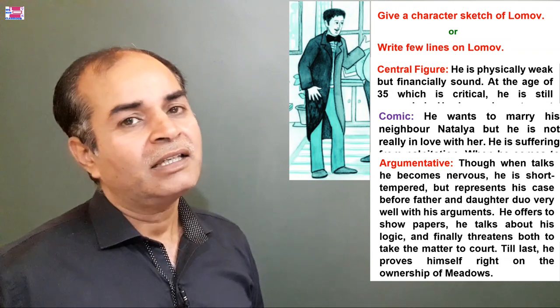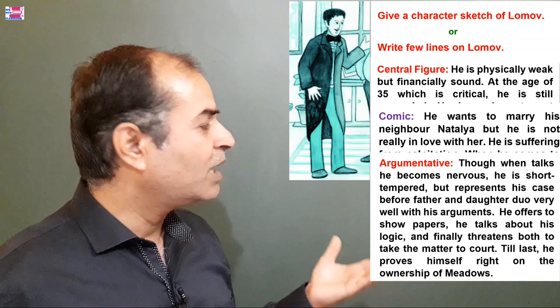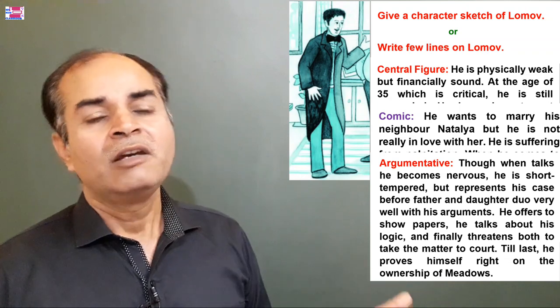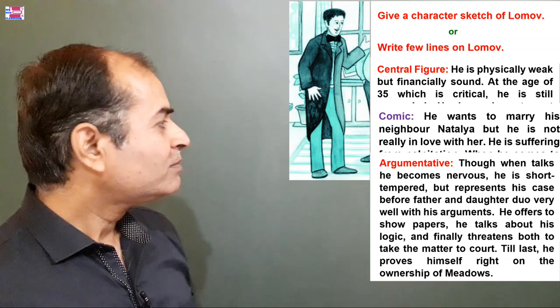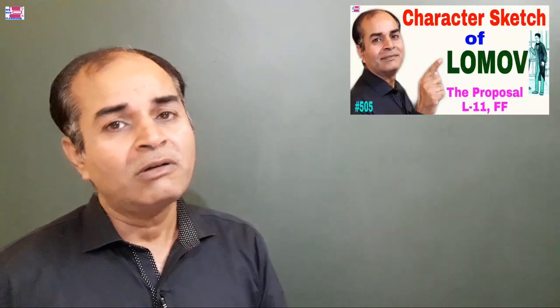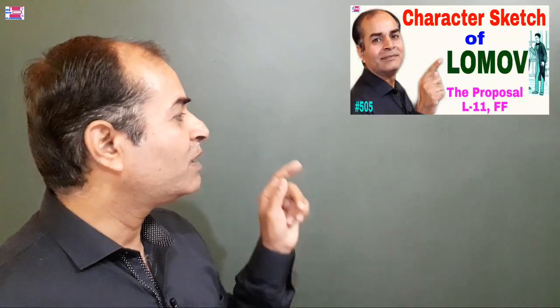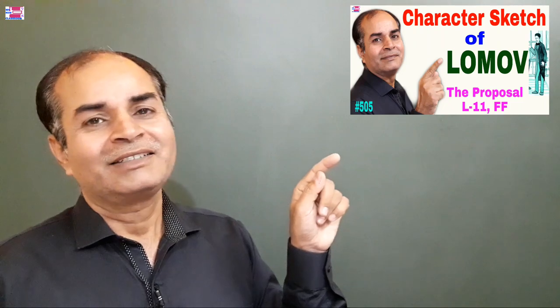Yeh teen baatein likh dijiye. In hundred words, aapne answer dena hai. Yeh observe kiya hai maine — few lines boli hain, yeh meri lines hain. Paanch mein se paanch aapko milenge. This should be enough on the character sketch of Lomov. I am coming next with the character sketch of Natalia. Is button ko dabaiye — yeh aapko le kar jayega. Thank you, God bless you.